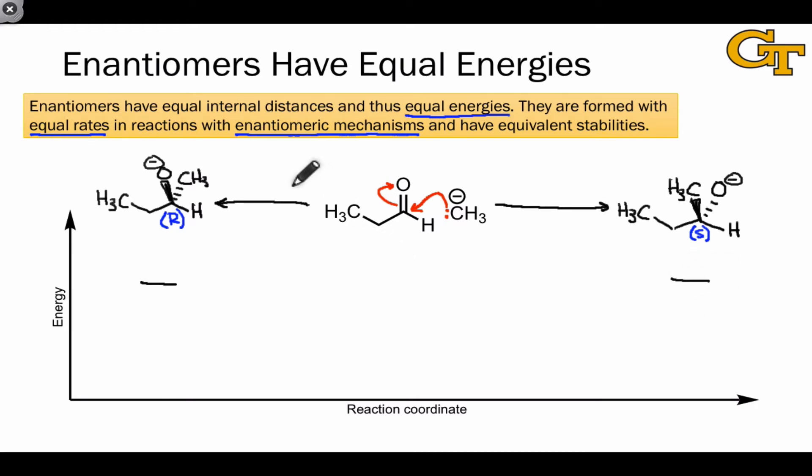Although I won't show it in detail, the transition states leading to the R and S enantiomers are also enantiomeric, and as a consequence, their energies will be the same. Since the reactants are what they are and they're associated with a particular energy themselves, the two reaction pathways are exactly equivalent in energy. The activation energies from the reactants to the transition states are equal, and the overall free energy changes associated with each possible process are also equal.